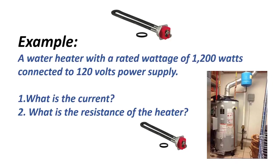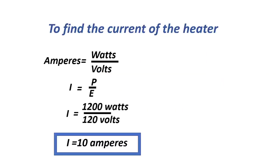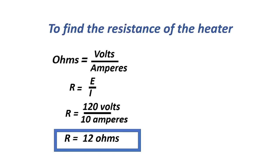A water heater rated at 1,200 watts is connected to a 120-volt power supply. What is the current? And what is the resistance of the heater? To find the current: I equals P over E equals 1,200 watts over 120 volts — current is 10 amperes. To find the resistance: R equals E over I equals 120 volts over 10 amperes — resistance is 12 ohms.